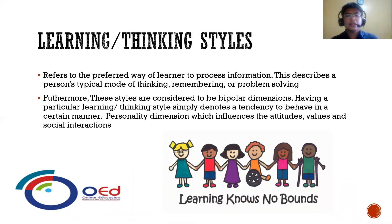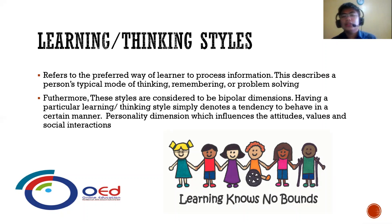Learning and thinking styles refer to the preferred way a learner processes information. This describes a person's typical mode of thinking, remembering, or problem solving. These styles are considered to be bipolar dimensions. Having a particular learning and thinking style simply denotes a tendency to behave in a certain manner. It is a personality dimension that influences attitudes, values, and social interactions.